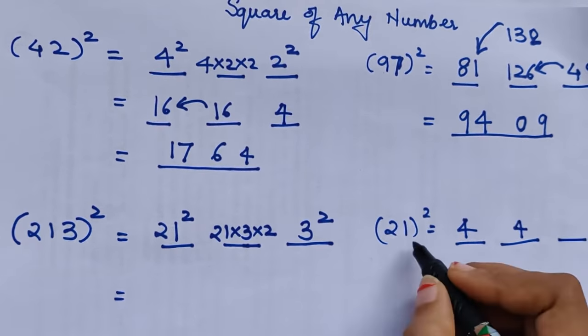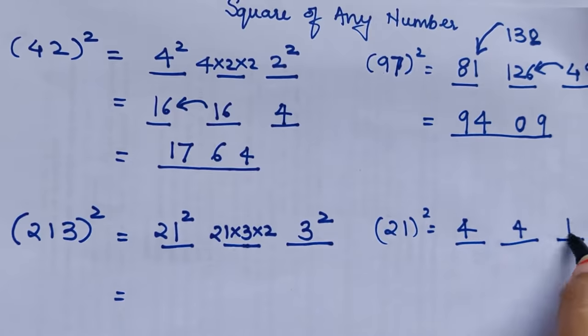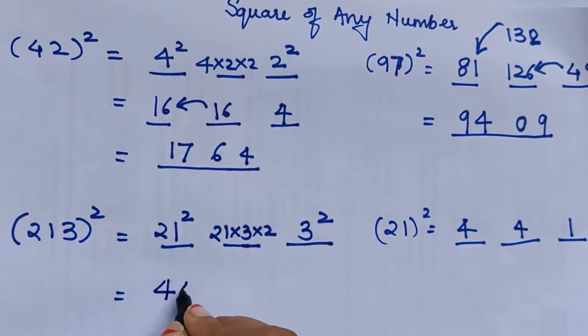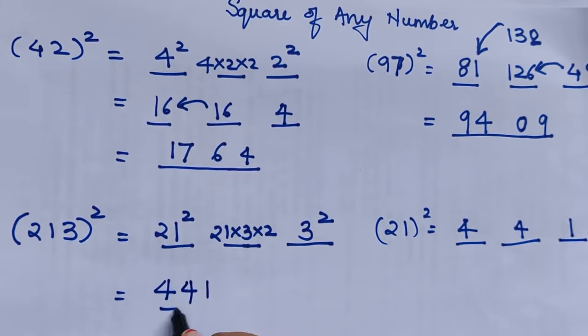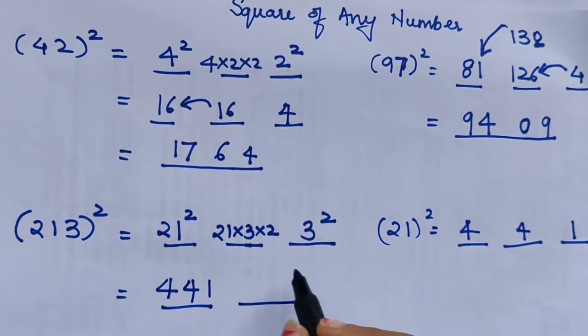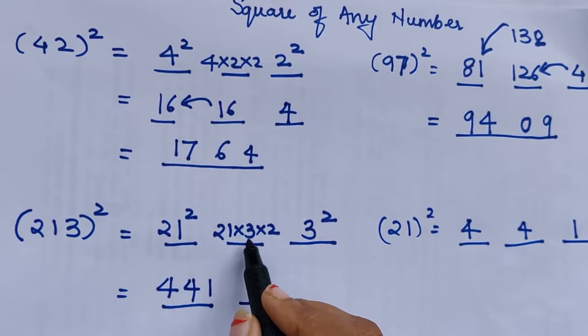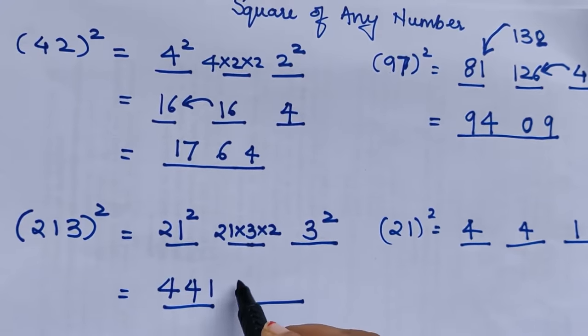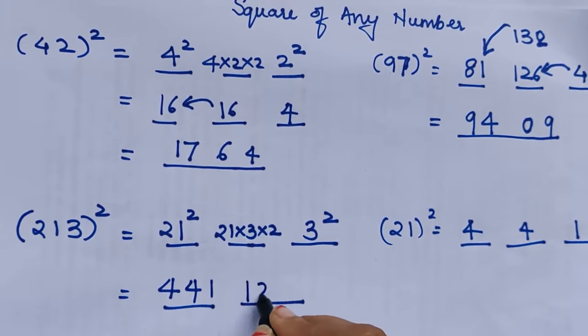This is my first part for the square of 213. In my middle term, I have to multiply 21×3×2, that is nothing but 21×6, that gets us 126. And the last part is square of 3, which is 9.